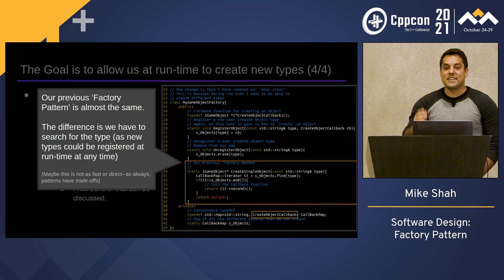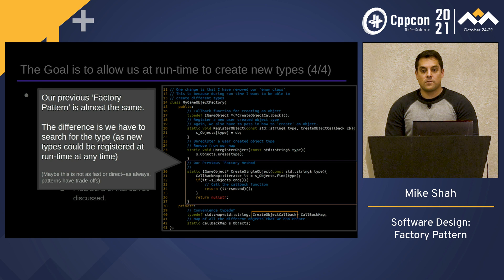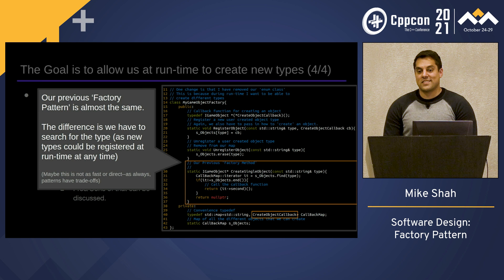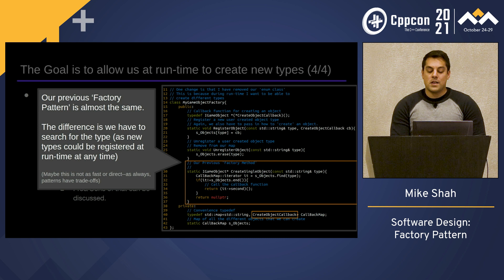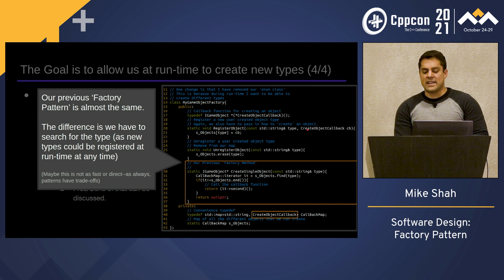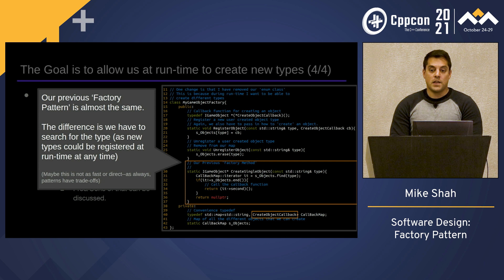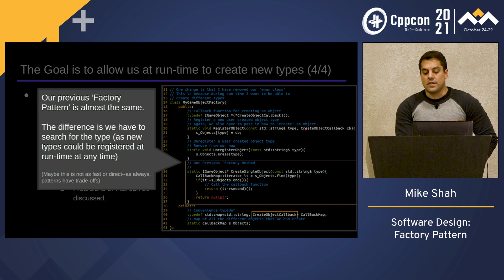Another observation: in this particular implementation we've implicitly coupled all of these types together — they've been required to have the same create-type method satisfying that particular API, but it's implicit. There's no way to see that it's required when you're creating a new object — it's not like an interface where you get a warning that you're not implementing a requirement. So the comment is about coupling: usually we try to decouple, but here there's coupling going on.